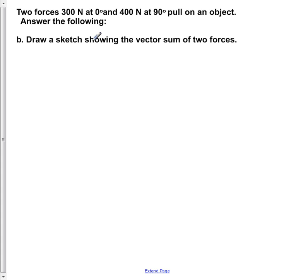Question B says draw a sketch showing the vector sum of the two forces. So in red before we showed that at a 0 degree angle we have a force of 300 N acting on our object. And we also have a 400 N force acting at a 90 degree angle on our object, which would result in our resultant of R.